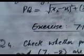We have Exercise 7.1, Question Number 4. Check whether the points (5, -2), (6, 4) and (7, -2) are the vertices of an isosceles triangle. So we have to check if these three points can be vertices of an isosceles triangle.